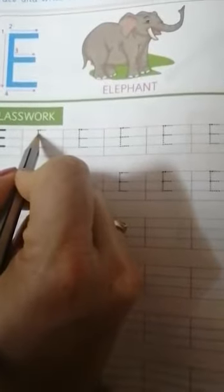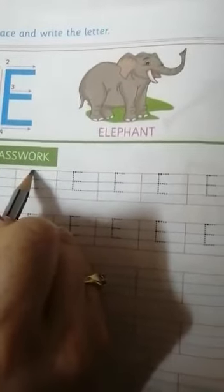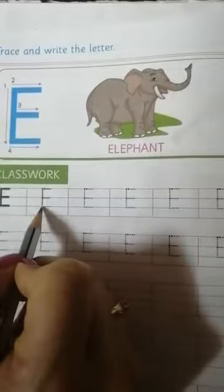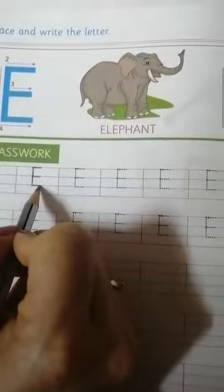Make a standing line, top to down. And make three sleeping lines at the top, at the mid, and at the down, left to right. This is letter E.